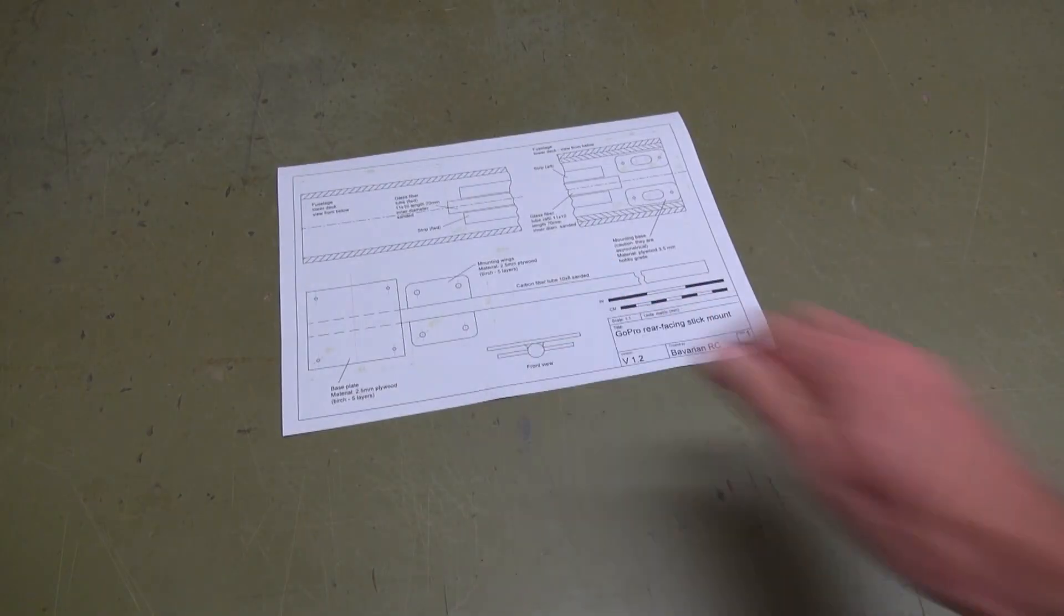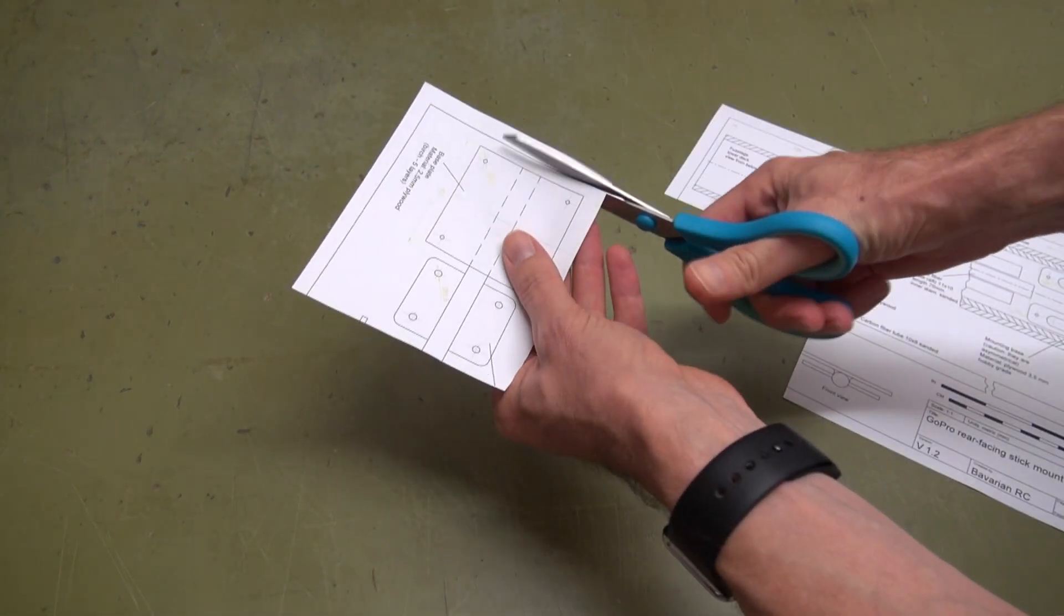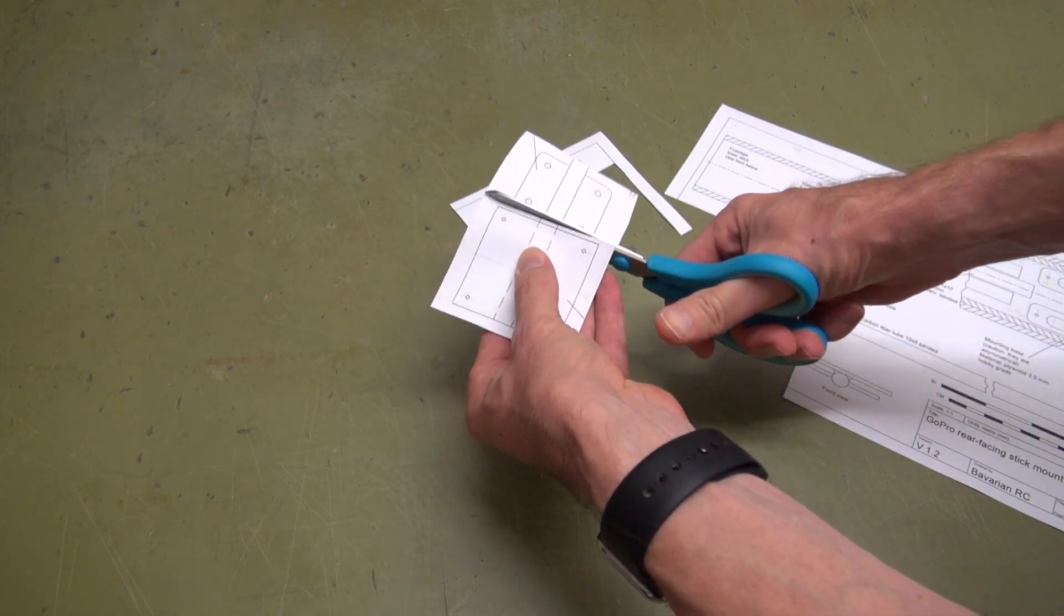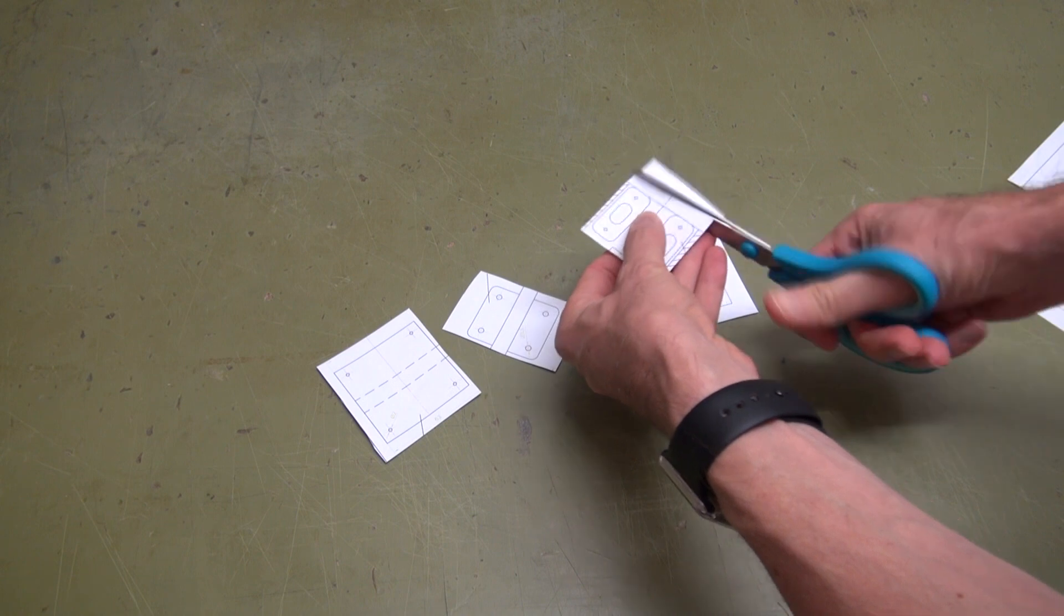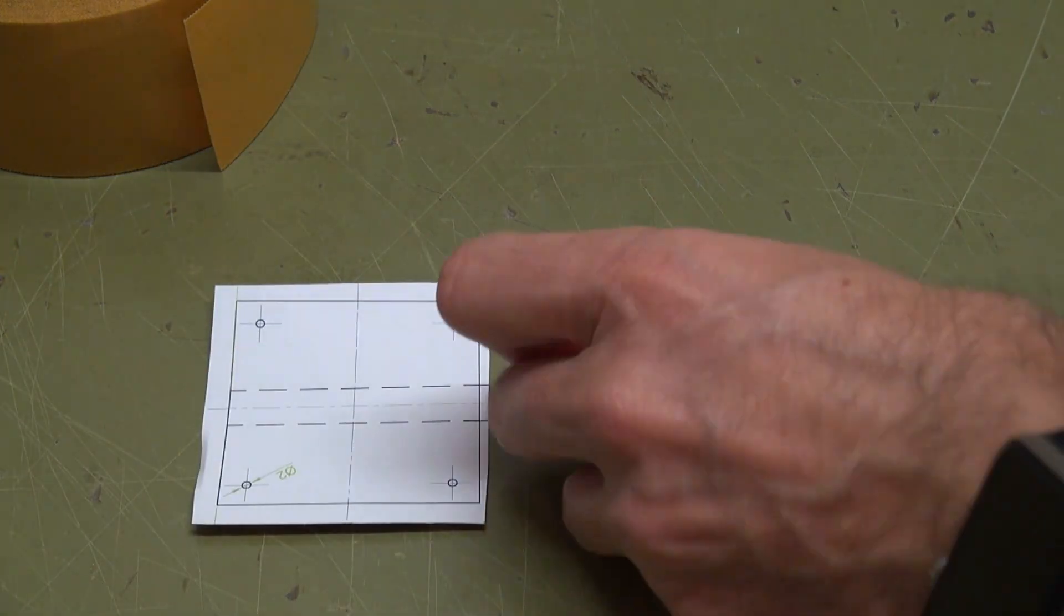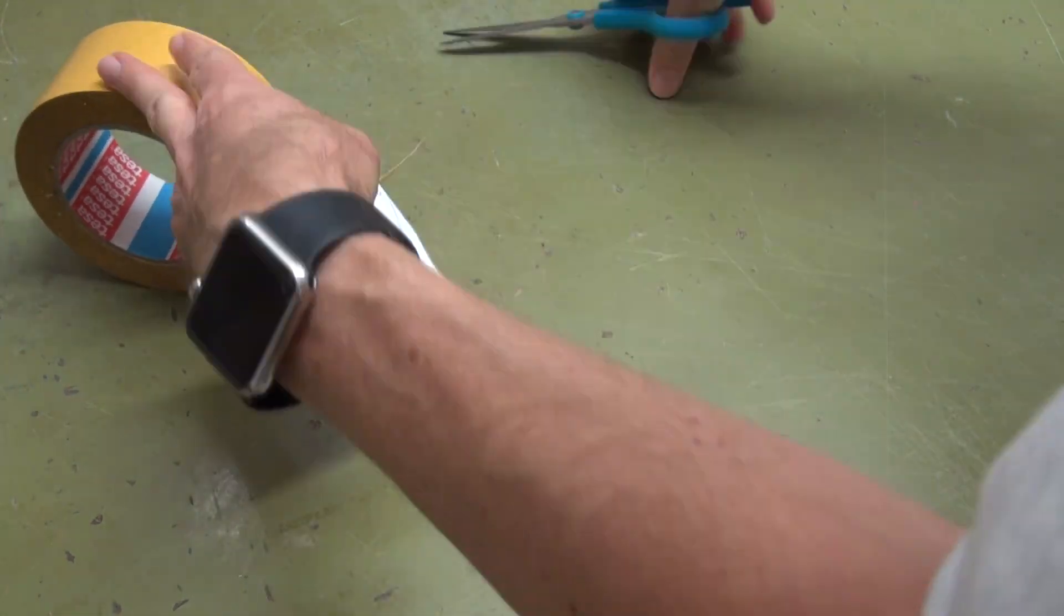Let's continue with the plywood parts. Cut out the plan for the plywood pieces, the base plate and the two wings, and the two parts for the mounting base. Apply some double-sided tape to the back of the paper.